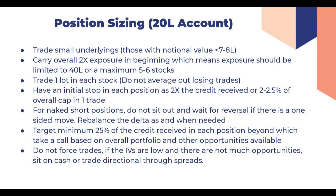I average out because of a larger account size and I deploy positions in chunks, but for a 20 lakh account I would not advise averaging out losing trades. The initial stop we can keep for each vol short position is 2 times the credit received, or 2 to 2.5% of overall capital in one trade. For naked short option positions, do not just sit and wait for reversal - say you have sold a 16,300 call and 15,700 put in Nifty and the market starts moving one side.